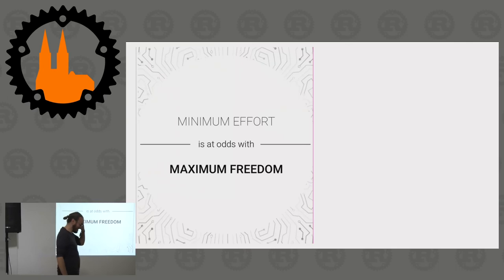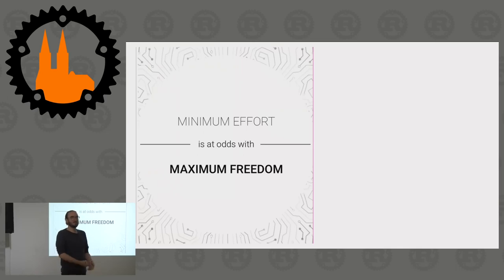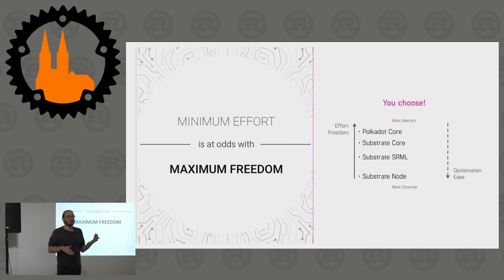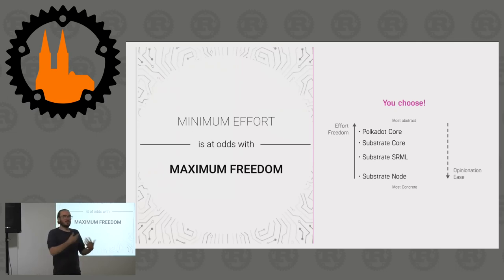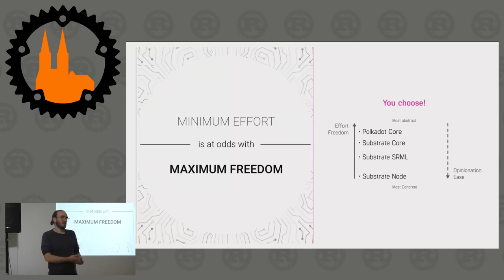As a general purpose framework, we're always struggling with the question of minimum effort - we want people to deploy their own chain with minimum work - which is at odds with maximum freedom to choose what you want. Rather than opting for one side, we decided on a stacked approach with different degrees of freedom depending on the effort you're willing to put in. The easiest level is Substrate Node: a YAML file to configure your entire chain, but you have to use a lot of opinionated ideas that Parity put in, including how accounting works on the chain.